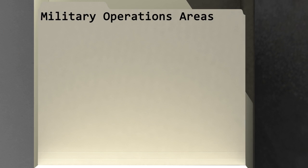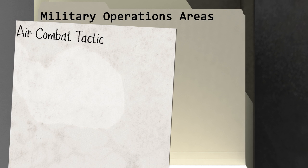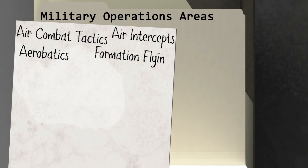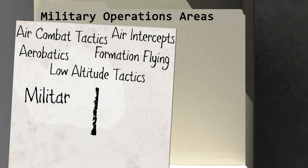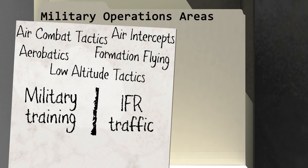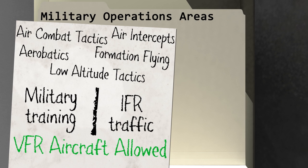Military operating areas, or MOAs, contain activities such as air combat tactics, air intercepts, aerobatics, formation flying, and low-altitude tactics. They exist to separate certain military training from IFR traffic. Whether or not an MOA is in use, VFR traffic may still fly through the area. However, extreme caution should be used when flying through an active MOA.